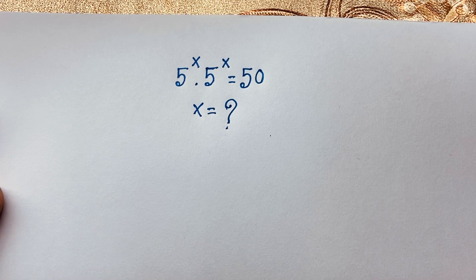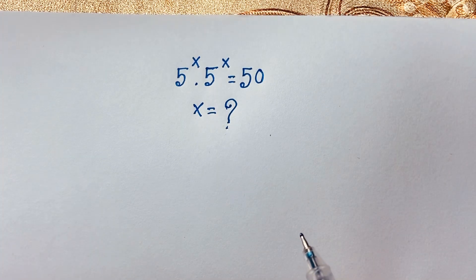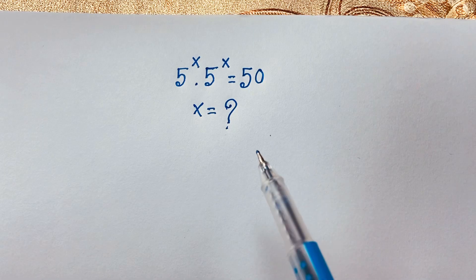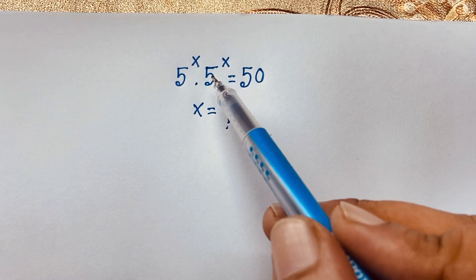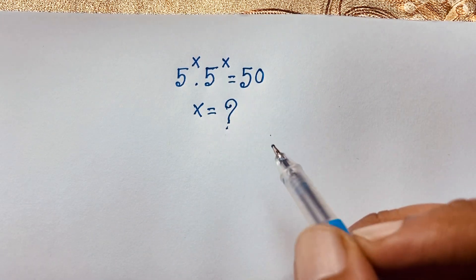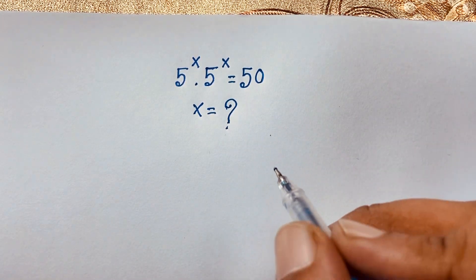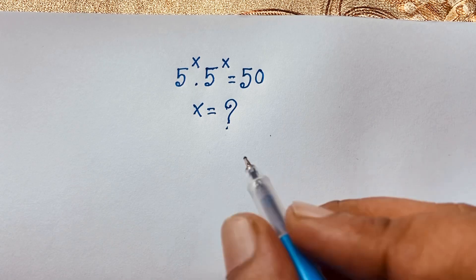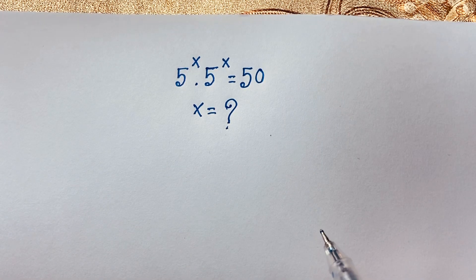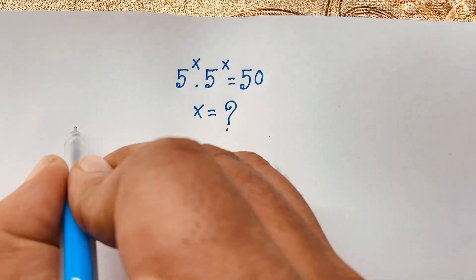Hello everyone. In this video we have solved a nice German math olympiad question: 5 to the power x times 5 to the power x is equal to 50. We have found out what is the value of x in this exponential math problem. So, solution.